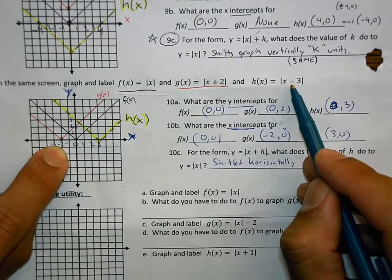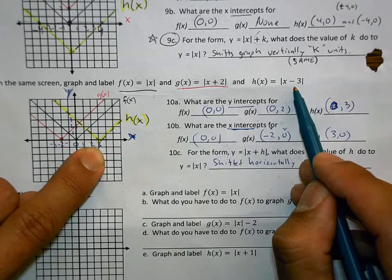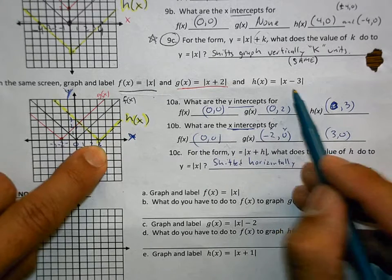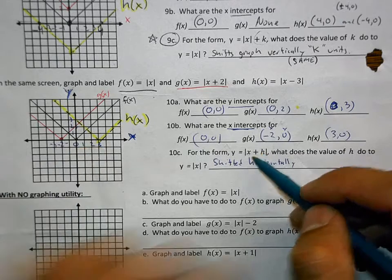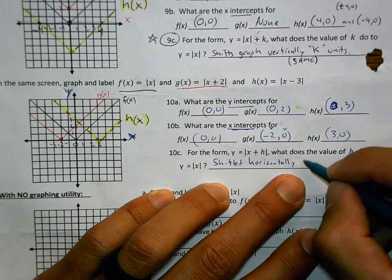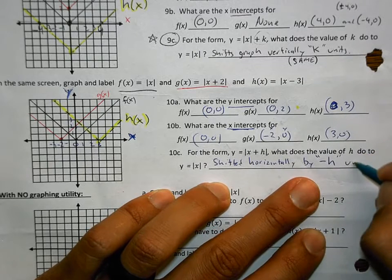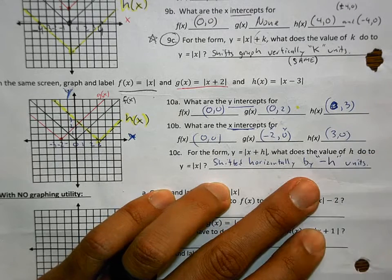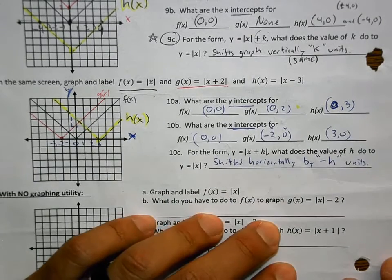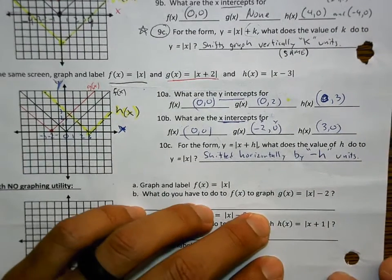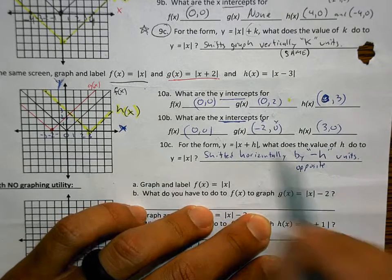It shifted horizontally. Look at the x-coordinate. What value did it go to? It went negative 2. To the left. Is that the same as positive 2? It's the opposite. What about this minus 3? Where did it go? Is that the same? It's the opposite.